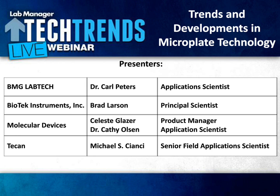For my portion of today's webinar, I will be telling you about the ClarioStar. The ClarioStar uses a linear variable filter monochromator for wavelength selection. By the end of my presentation, you will better understand what an LVF monochromator is, how it is different from traditional monochromators, and why LVF monochromators are more sensitive.